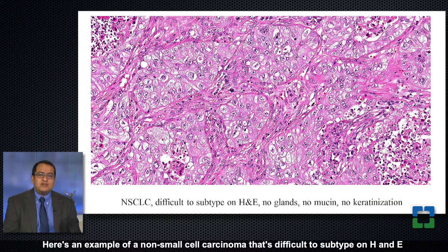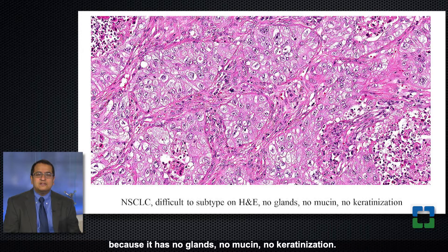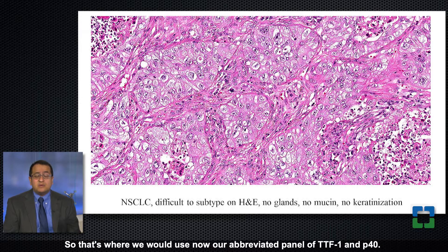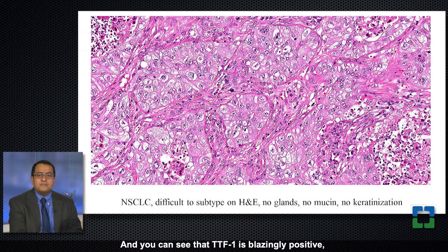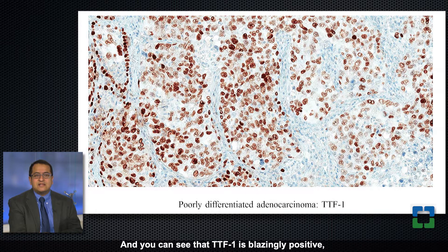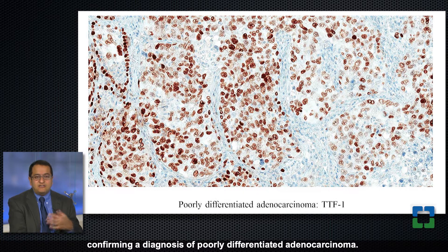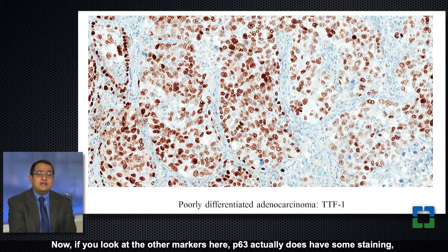Here's an example of a non-small cell carcinoma that's difficult to subtype on H&E because it has no glands, no mucin, no keratinization. That's where we would use our abbreviated panel of TTF1 and p40, and you can see that TTF1 is blazingly positive, confirming a diagnosis of poorly differentiated adenocarcinoma.